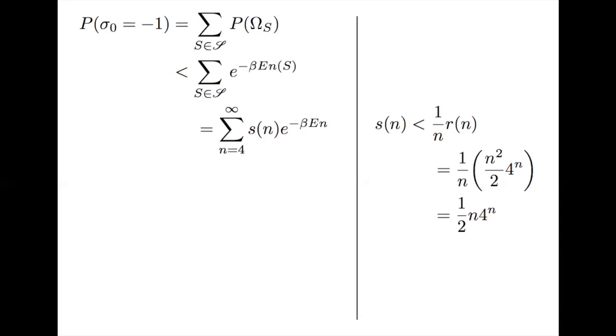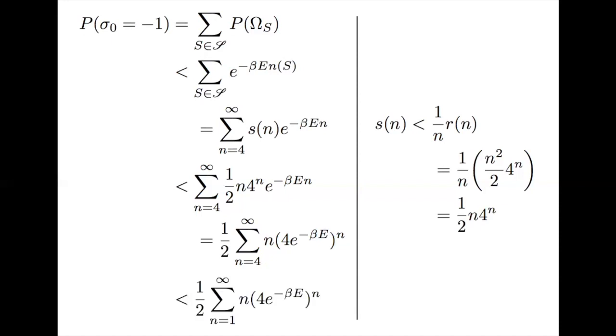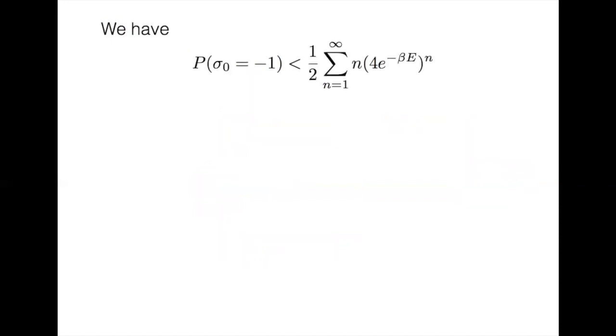Going back to our probability calculation, we can now replace s of n with this term that we now know to be larger. We can then do a little bit of rearranging and then expand the sum to start at 1. And we get that the probability that sigma naught is negative 1 is less than 1 half times the sum from 1 to infinity of n times 4 times e to the negative beta e all to the n. But because this is an infinite sum, it doesn't tell us very much.